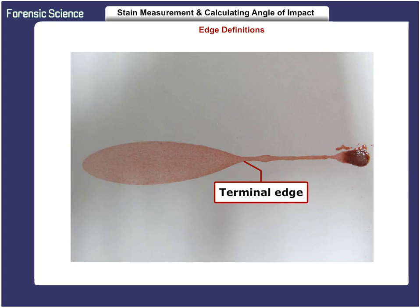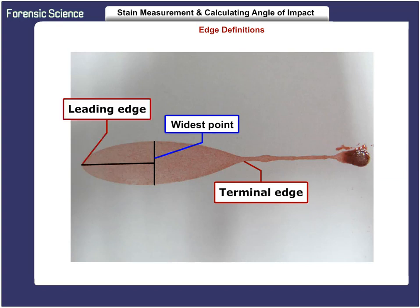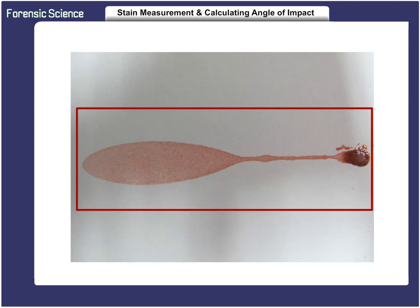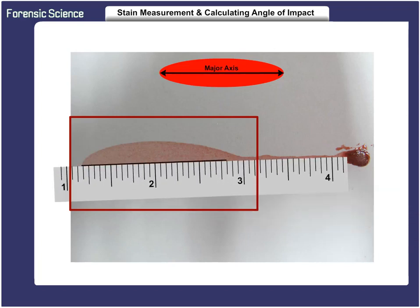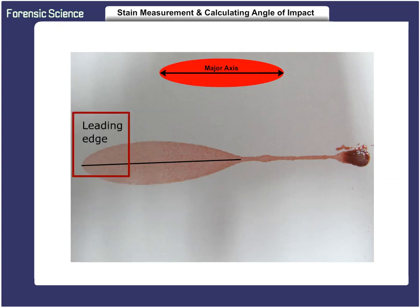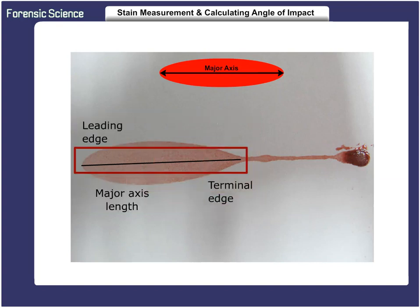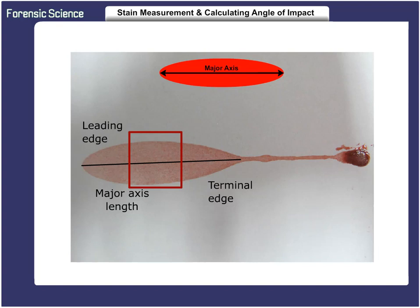To eliminate the distortion from the terminal edge and form an ellipse, we must measure the distance from the center of the widest point to the leading edge of the stain. This value is then doubled to arrive at the overall length of the undistorted stain. To calculate the angle of impact, the first step is to fit an ellipse to the oval shape of the stain. The ellipse must be divided along the major or minor axis. We draw a line for the length through the middle of the stain from the leading edge to the terminal edge, creating the major axis line. We determine the widest part of the stain by drawing a line to show the width of the stain, creating a minor axis.